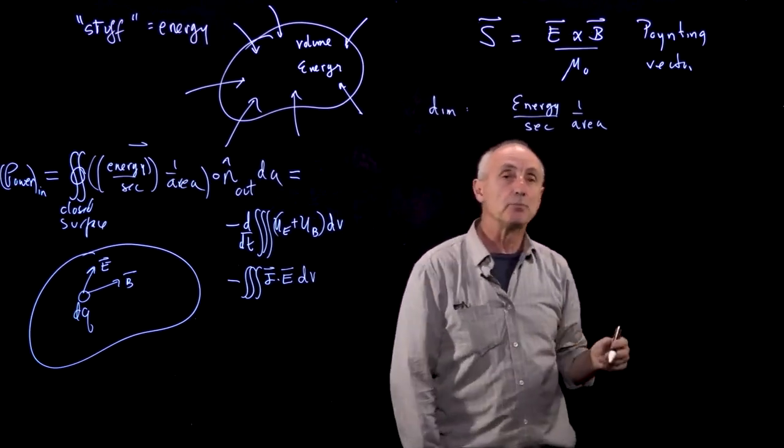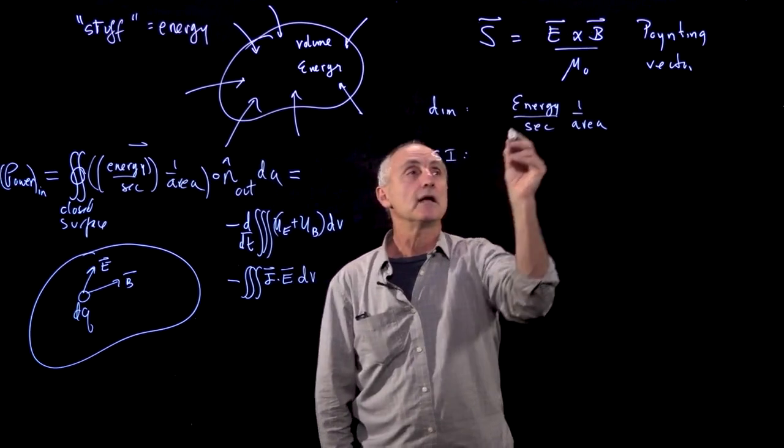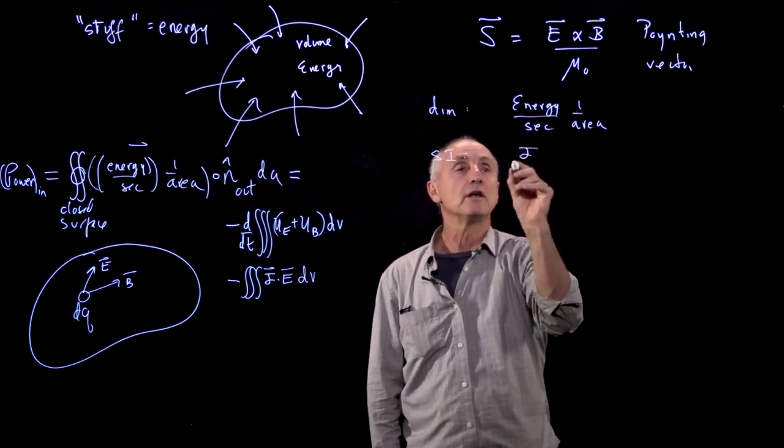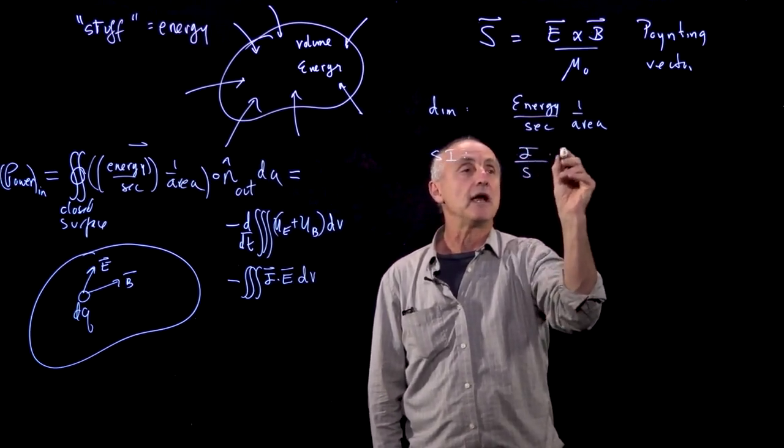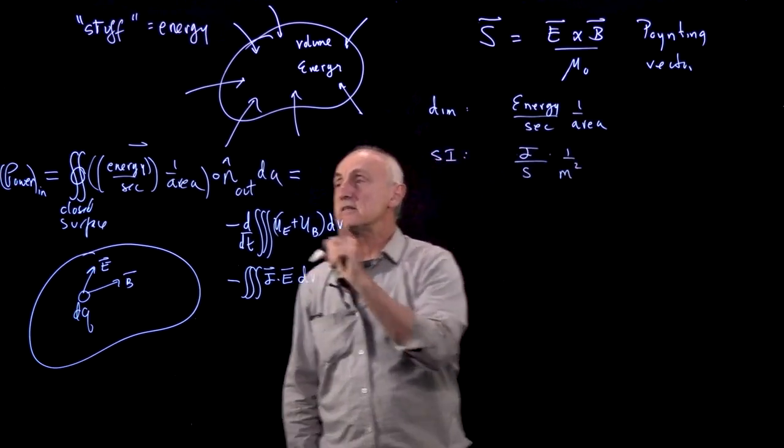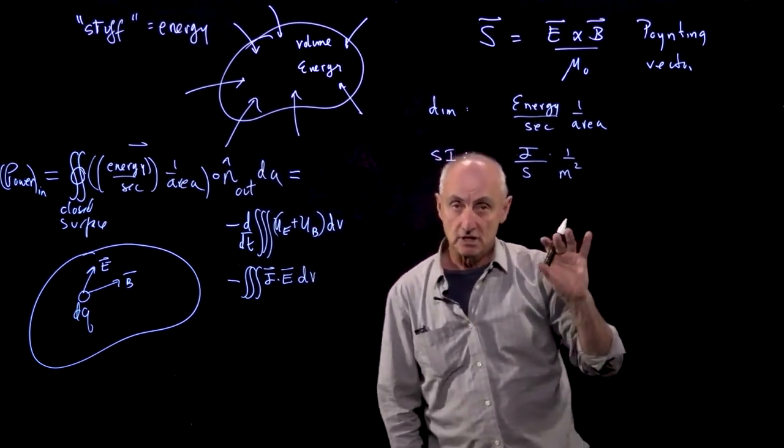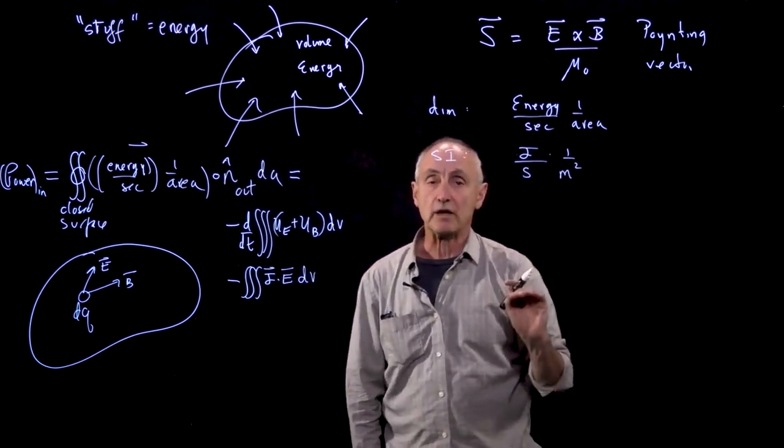If you wanted to put this into SI units: energy we have joules, seconds, and area one over meter squared. This is the correct vector that gives us energy conservation. It's not quite unique, but it's the correct vector.